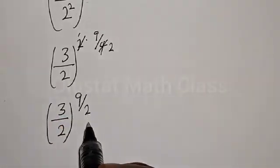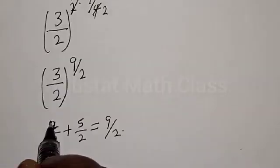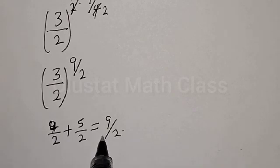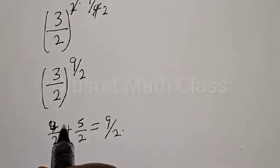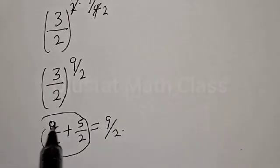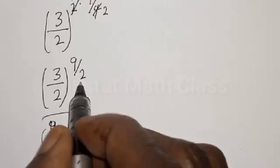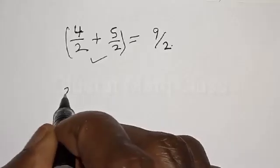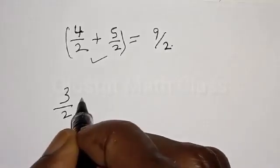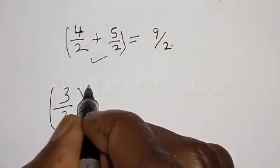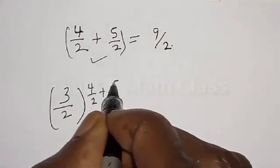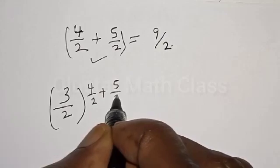Now, 9 over 2 can be written as 4 divided by 2 plus 5 divided by 2, which equals 9 over 2. Let's substitute this into our equation, giving us 3 divided by 2, raised to the power 4 over 2 plus 5 over 2.